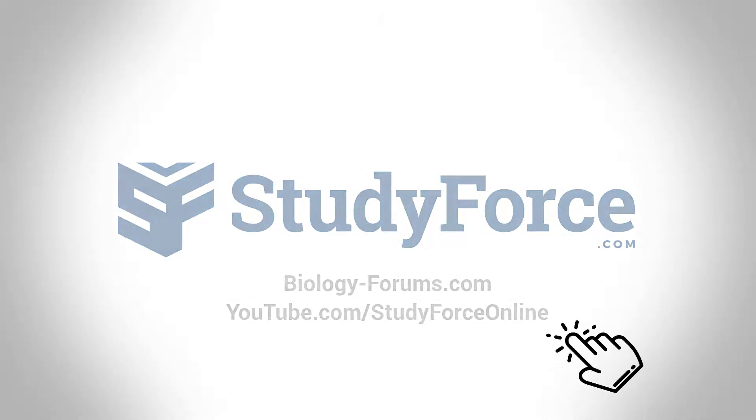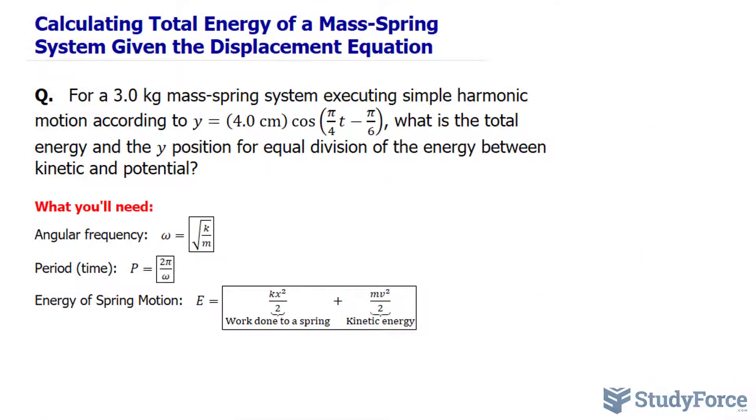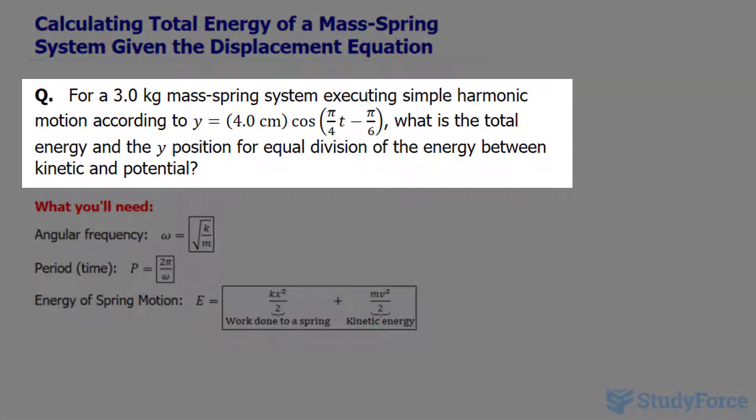In this lesson, we'll discuss how to calculate the total energy of a mass-spring system given the displacement equation. The question reads: for a 3.0 kilogram mass-spring system executing simple harmonic motion according to this equation, what is the total energy and the y position for equal division of energy between kinetic and potential?